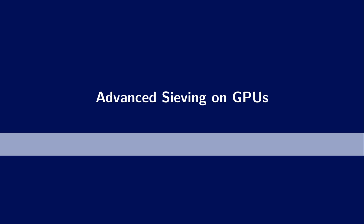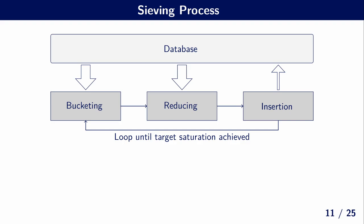So now it's time to discuss these advanced sieving methods and how we adapted them to GPUs. So in general, our sieving process goes as follows: We have our big database of lattice vectors, and then we have three phases that repeat. First, we have a bucketing phase where the database is partitioned into multiple buckets. Then we have the reducing phase where inside each bucket, we check all pairs for close vectors to give a shorter vector in return. And then we insert these short vectors back into the database and we repeat this.